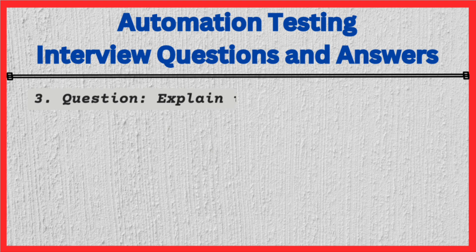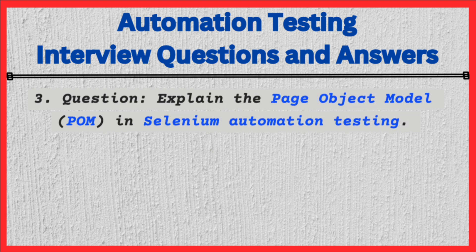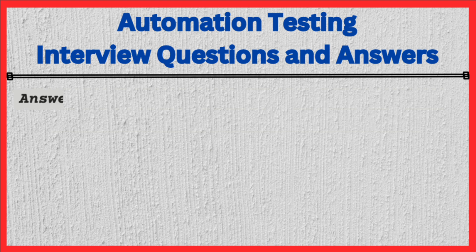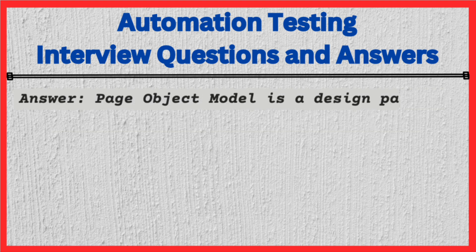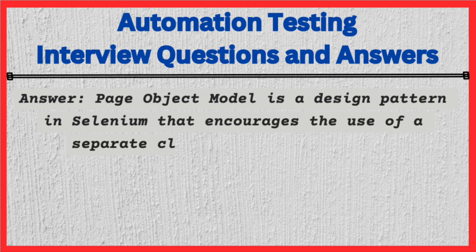Question: Explain the Page Object Model (POM) in Selenium automation testing. Answer: Page Object Model is a design pattern in Selenium that encourages the use of a separate class for each web page.